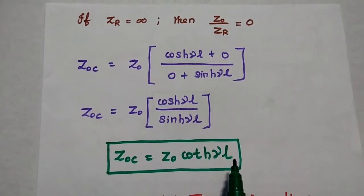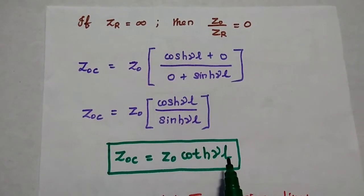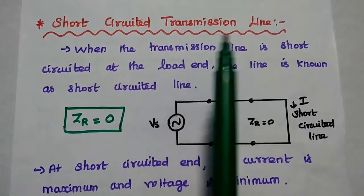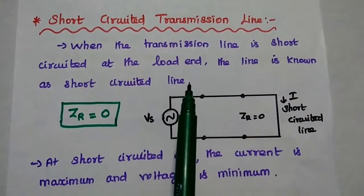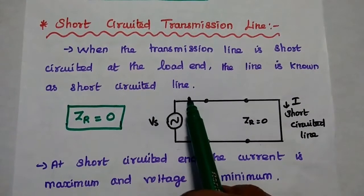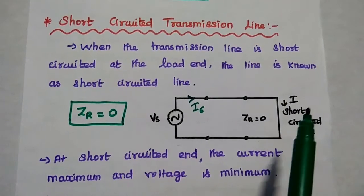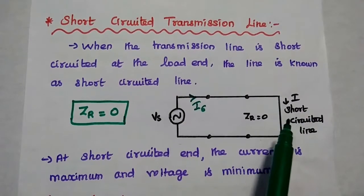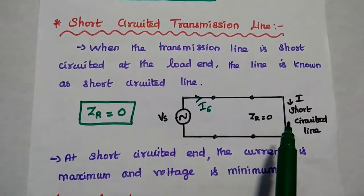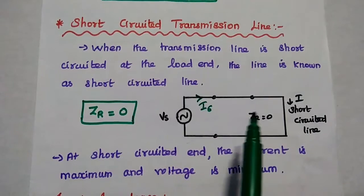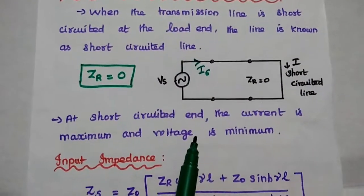So the input impedance for the open circuit line Z_OC is equal to Z0·coth(γL). Next, the short circuit transmission line: when the transmission line is short circuited at the load end, the line is known as short circuit line. In this diagram, Vs is the sending end voltage and Is is the sending end current. The load end is short circuited. Since it is short circuited, there is maximum current at the short circuit end but the voltage is minimum. Since maximum current is flowing through it, its impedance becomes 0. So the receiving end impedance ZR is equal to 0 for short circuit line.